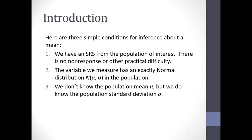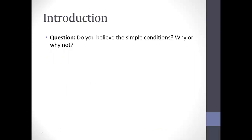We're going to start with a sort of simple or artificial case to motivate what we're talking about. Suppose we have three conditions: we have a simple random sample, the variable we're measuring has exactly a normal distribution, and we're trying to estimate the population mean mu but we do know the standard deviation sigma. These conditions aren't necessarily likely to actually happen in practice, but we'll start here and then come back to address them later.